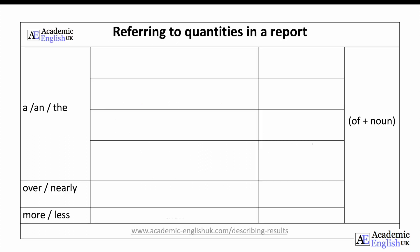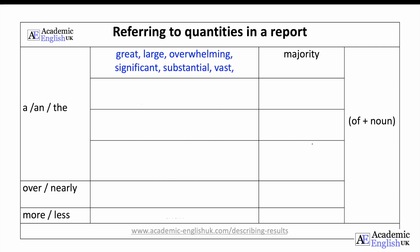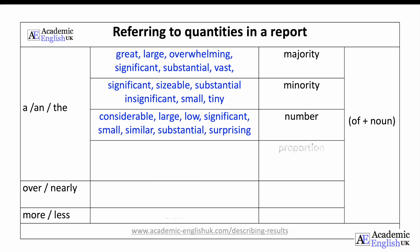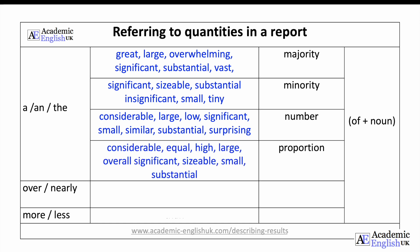Let's look at the language phrases we can use in describing data. In this table, our first word is 'majority' and these are its collocations — so a phrase could be 'a large majority of students said that.' Our next word is 'minority' with its collocations, then 'number,' then 'proportion.' You can use fractions by saying 'over half of the students noted that,' or you can use percentages by saying 'more than' or 'less than' — for example, '30% of the students felt they...' You may want to pause the slide and read through these in more detail.